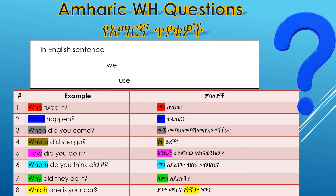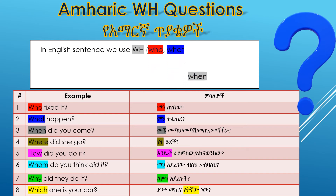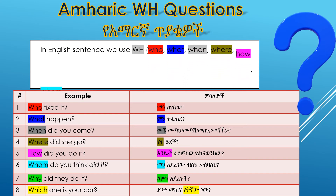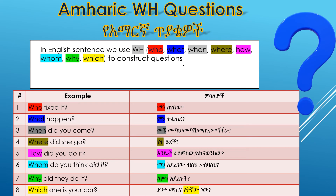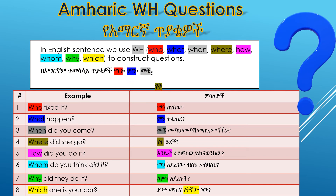So, in English sentences, we use WH: who, what, when, where, how, whom, why, which to construct questions. Similarly, we use the same in the other language: MAN, MIN, MECHE, YET, INDITH, HOW MAN, LEMON.